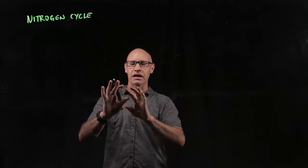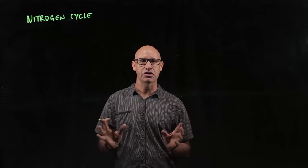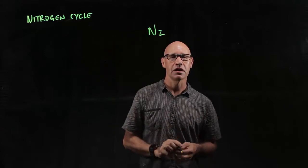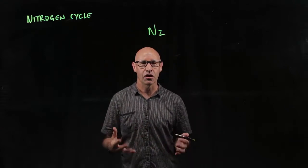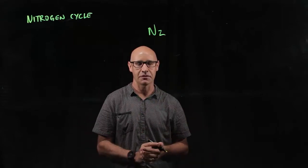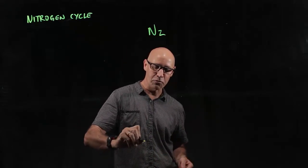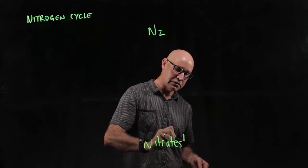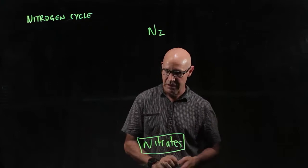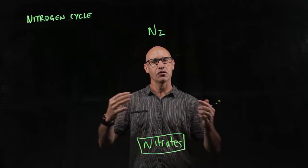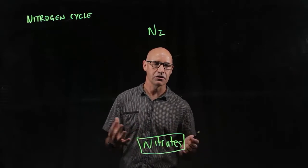Now nitrogen is naturally found, the reservoir for nitrogen is in the atmosphere as N2. Now the thing is though, nitrogen can't be accessed by plants straight from the atmosphere. It needs to be in a form called nitrates. So nitrates are the form of nitrogen in which plants are able to absorb through their roots and incorporate in their tissue.